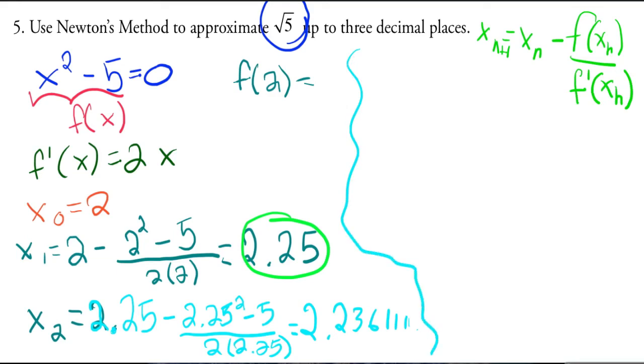x sub 3. Notice here I only have one decimal spot that matches and I want up to three decimal places. So the next one is 2.236111 minus 2.236111 squared—and it's 1111 but I'm just going to write it like that because I'm running out of space here.